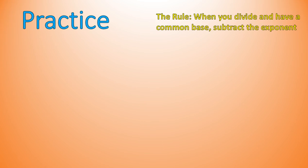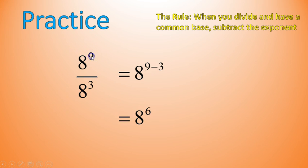Here is our rule again. Try it out with this one: 8 to the power of 9 divided by 8 to the power of 3. Pause the video and try that one out. Spoiler alert — I'm about to give the full solution, so pause it now. Here's the solution: I write the base number 8, and then subtract the exponents — the exponent from the numerator, 9, minus the exponent from the denominator, 3. 9 minus 3 gives us 6, so it ends up being 8 to the power of 6. You have to learn the rule because we're going to be doing more complicated questions.